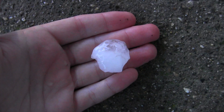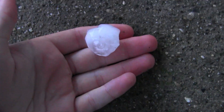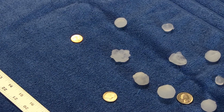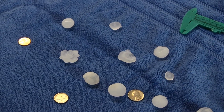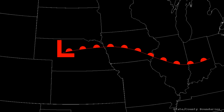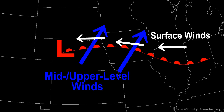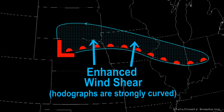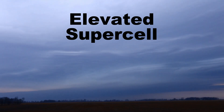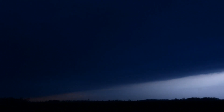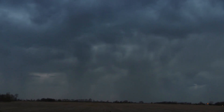Elevated thunderstorms associated with particularly dynamic low-pressure systems can become prolific hail producers. These setups often feature strong lifting along the warm front, as well as an increase in moisture from the south, with more forceful lifting provided by jet stream dynamics. Because winds aloft change speed and direction sharply north of such warm fronts, enough wind shear can exist for the updraft to begin rotating — we now have an elevated supercell. These storms can produce dangerous lightning and damaging hail, sometimes exceeding 2 inches in diameter. And this is why you should treat all National Weather Service severe thunderstorm warnings seriously.